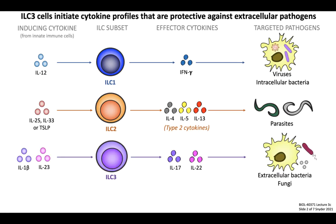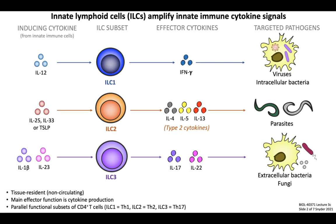ILC3s are activated in response to IL-1-beta or IL-23, and produce the inflammatory cytokines IL-17 and IL-22 as a result. These are important for defense against extracellular pathogens, including bacteria and fungi, since IL-17 can stimulate chemokine production that helps recruit neutrophils, while IL-22 stimulates antimicrobial peptide production. ILCs are typically non-circulating cells, which in immunology we refer to as tissue-resident leukocytes. They sense cytokine cues from local infection and amplify those signals to tailor the response to the specific type of infection.